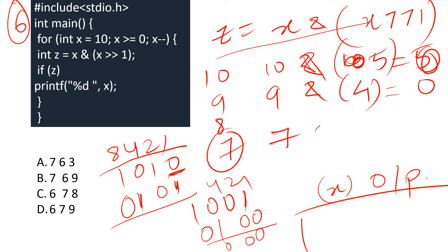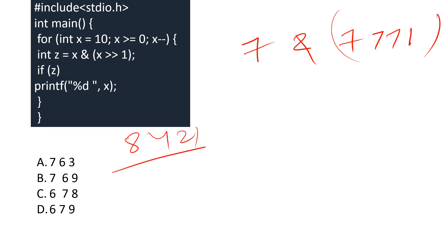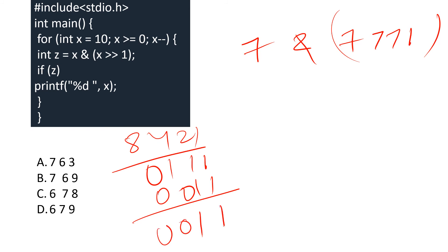For x = 7: binary is 0111. Right-shifted by 1 gives 0011. Performing AND: 0111 AND 0011 = 0011, which is non-zero. So x = 7 would be printed.